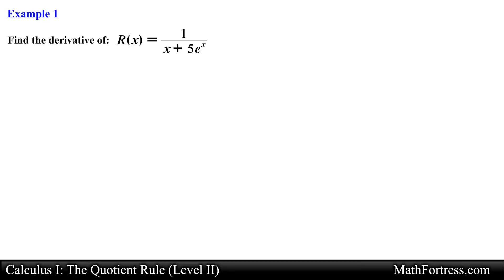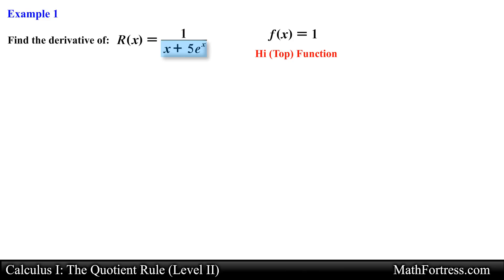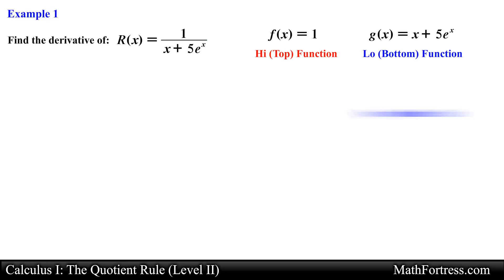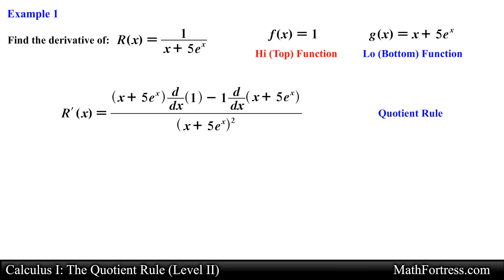Find the derivative of r equals 1 over the quantity x plus 5 times e to the x. Notice that this function seems to be formed solely by the function in the denominator. In order to find the derivative of this function we actually need to apply the Quotient Rule. We can think of the constant 1 as our f, the high function, and the quantity x plus 5 times e to the x as our g, the low function. Then the derivative will be equal to the following expression.